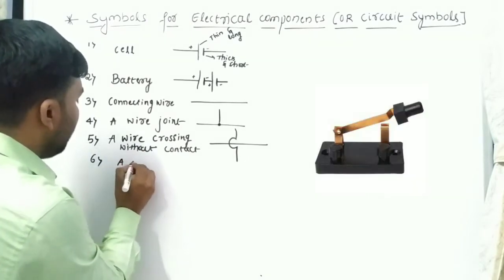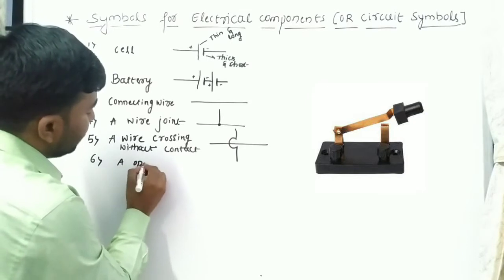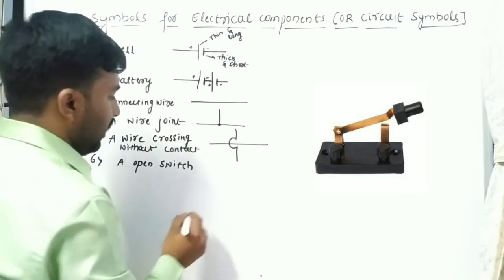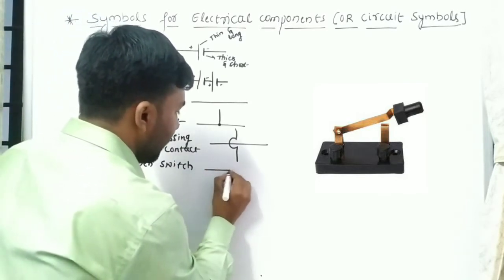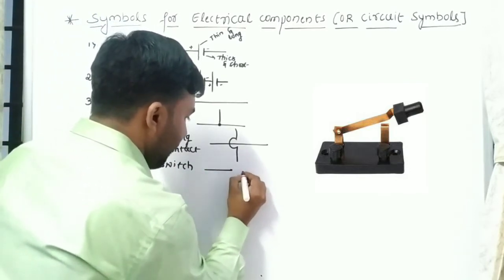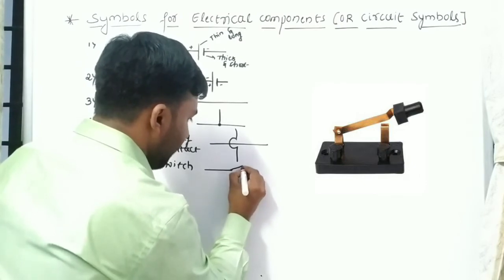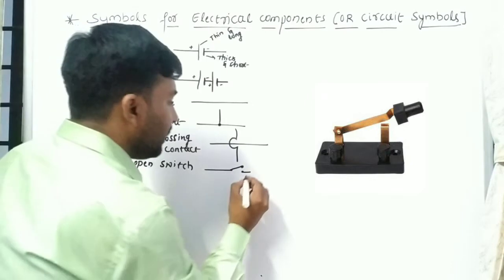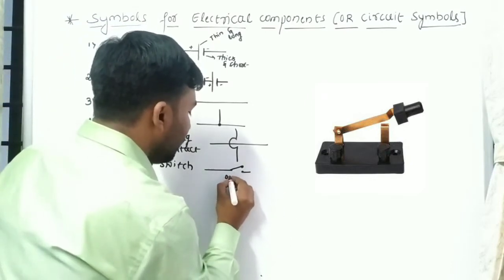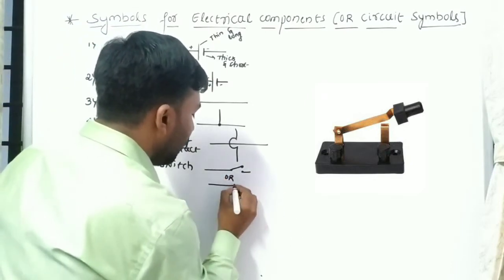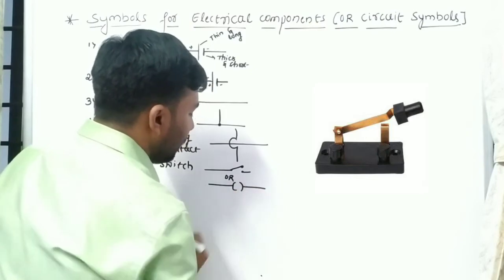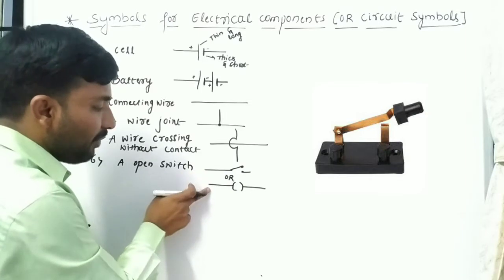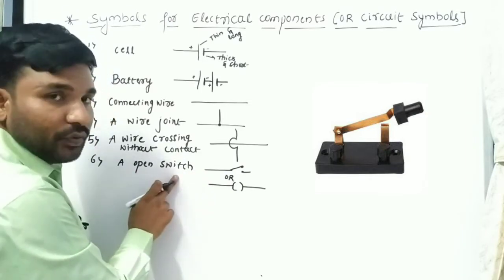Next is an open switch. This is the symbol for the open switch — we have one symbol showing the lever lifted, and another alternative symbol also representing the open switch.